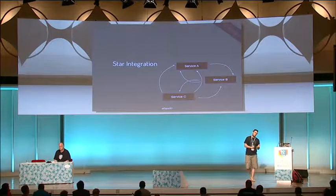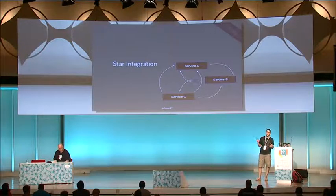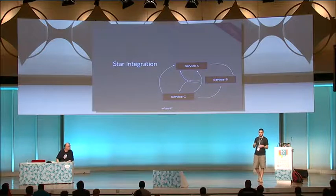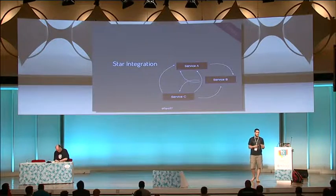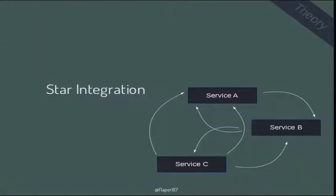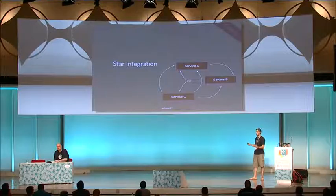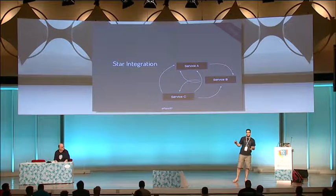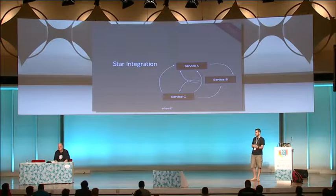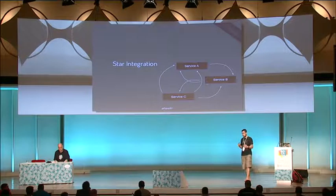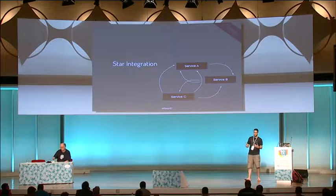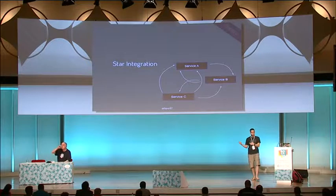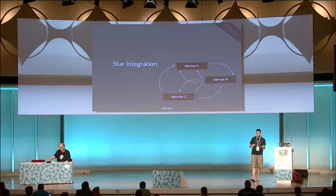Star integration is called that because it's supposed to look like a star, but it's more like spaghetti integration — all services know what other services do and they all talk together on a case-by-case basis. Service A needs something from service B, but first talks to service C because it needs something from there. It's quite a mess. It's very risky and error-prone, with a high risk of not having a contract when those services communicate.